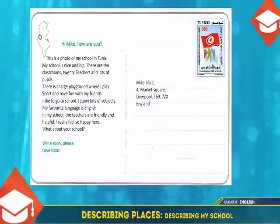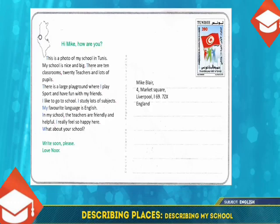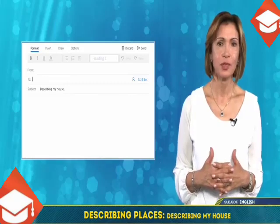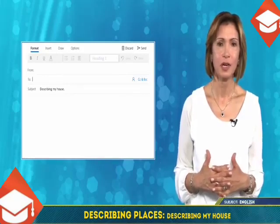This is an example of a postcard — read it. You can imitate this text or add more details about your school. Don't forget to write a paragraph of 6 lines and don't make spelling mistakes. That's all for now, see you later. In the second part, you will describe your house and the parts of your house.